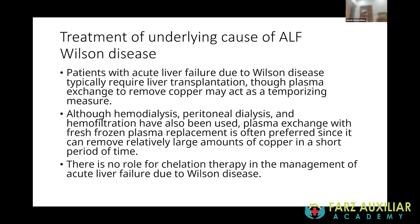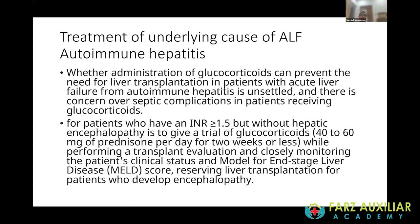For autoimmune hepatitis, it is not entirely clear whether glucocorticoids can prevent the need for liver transplantation, and there is concern over septic complications. However, for patients with an INR greater than 1.5 but without hepatic encephalopathy, a trial of glucocorticoids — 40 to 60 mg of prednisone per day for two weeks — is acceptable while performing a transplant evaluation and closely monitoring.